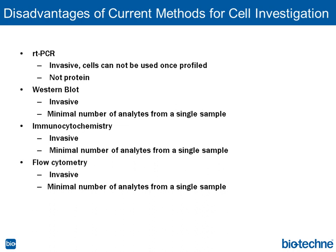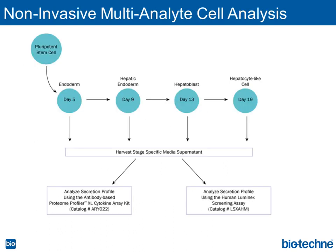Currently, the most common methods for investigating these cells — RT-PCR, Western blot, immunocytochemistry, and cytometry — are all invasive. Once the cells are profiled using these methods, you can't use them for downstream experiments or continue them in culture. For RT-PCR, an additional disadvantage is that you're not looking at protein, so RNA levels don't necessarily correlate directly with protein levels. For the protein-based methods, you're limited in the number of analytes you can look at from a single sample. So what we've been using is antibody-based arrays and Luminex to address some of these issues.